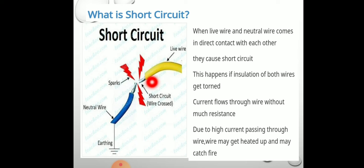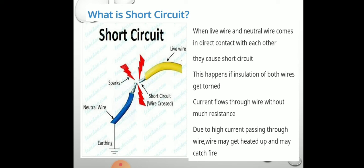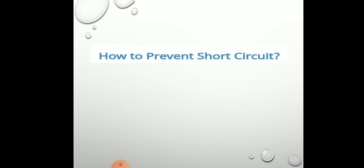Short circuit occurs when the insulation of both wires gets torn and the live wire and neutral wire come in contact. Current then flows through the wire without much resistance, and due to the high current passing through, the wire may get heated up and may catch fire.